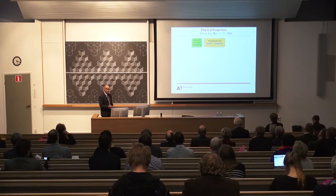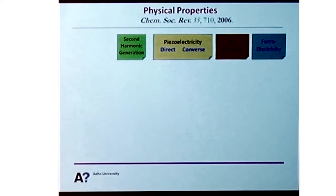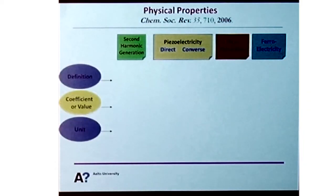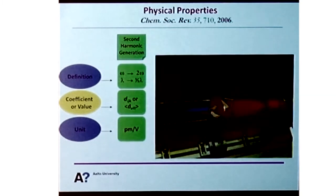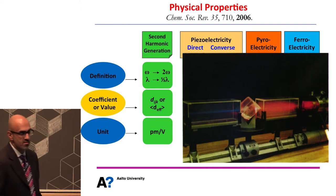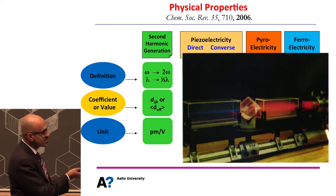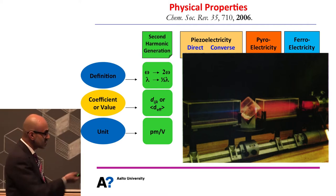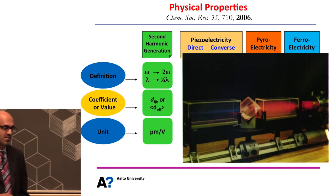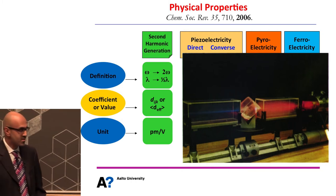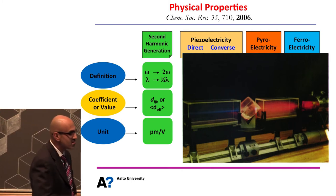What can we do once we make these compounds? As I said, there are a few measurements that we do in our lab: second harmonic generation, piezoelectricity, pyroelectricity, and ferroelectricity. For SHG we're halving the wavelength. You can see a red laser light impacting on a large inorganic crystal and coming out is half the wavelength, or twice the frequency — red light coming in, green light coming out. These only occur in materials that exhibit SHG, and all polar materials will exhibit this phenomenon.